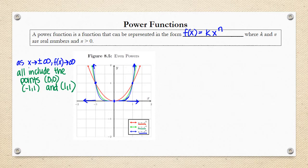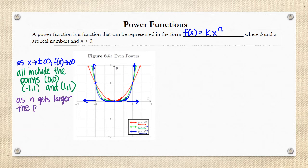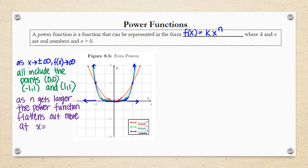As the power gets larger, you can see that with x² we're not as flat around x = 0. But as the power gets larger — x⁴ gets a little flatter around x = 0, and x⁶ is even flatter. So the higher the power n, the more flat the power function is around x = 0, and the power function flattens out.